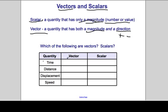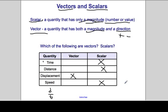Let's classify each quantity. Does time have a direction? No — time is a scalar. Distance is how far but does not indicate direction, and as stated, you can't have a negative distance, so distance is a scalar. Displacement is how far and in which direction, and can be positive or negative — so displacement is a vector. Speed is distance divided by time; distance is a scalar and time is a scalar, so speed simply indicates how fast without a direction — speed is a scalar. For beginning learners, memorizing which quantities are vectors and which are scalars is important, and you can refer to this data table from time to time.